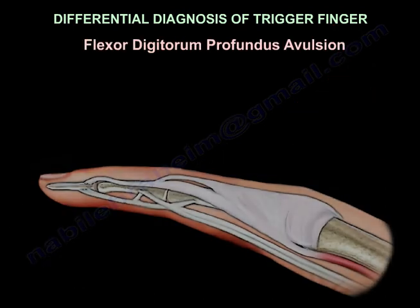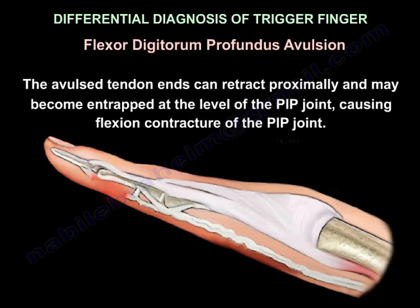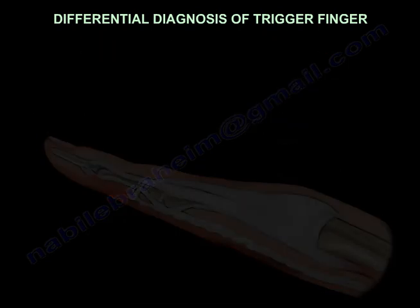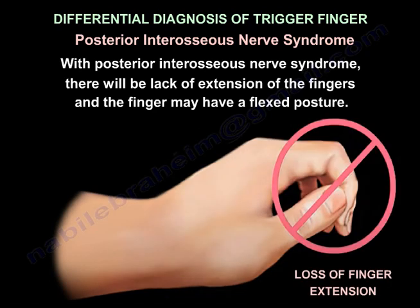Flexor digitorum profundus avulsion: the avulsed tendon ends can retract proximally and may become entrapped at the level of the PIP joint, causing flexion contracture of the PIP joint. With posterior interosseous nerve syndrome, there will be lack of extension of the fingers and the finger may have a flexed posture.